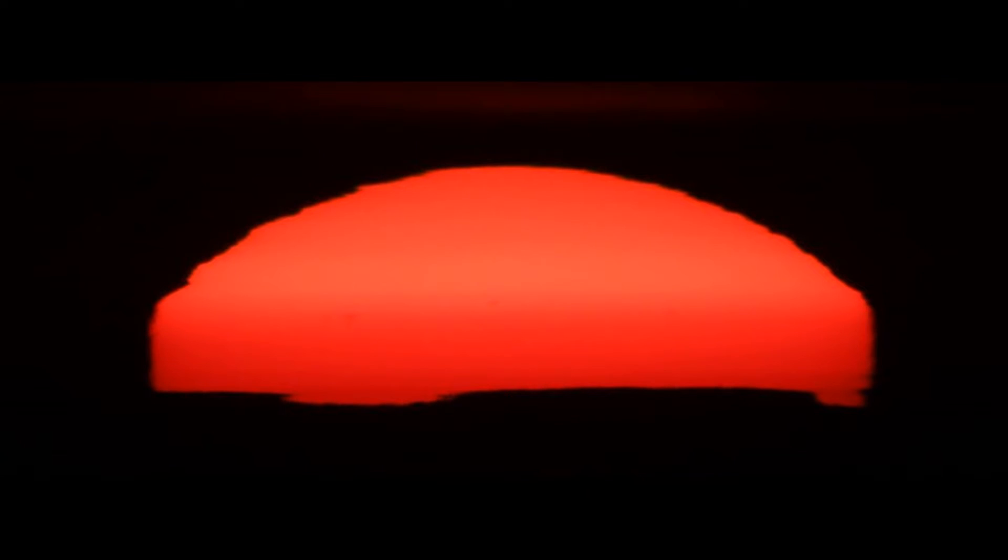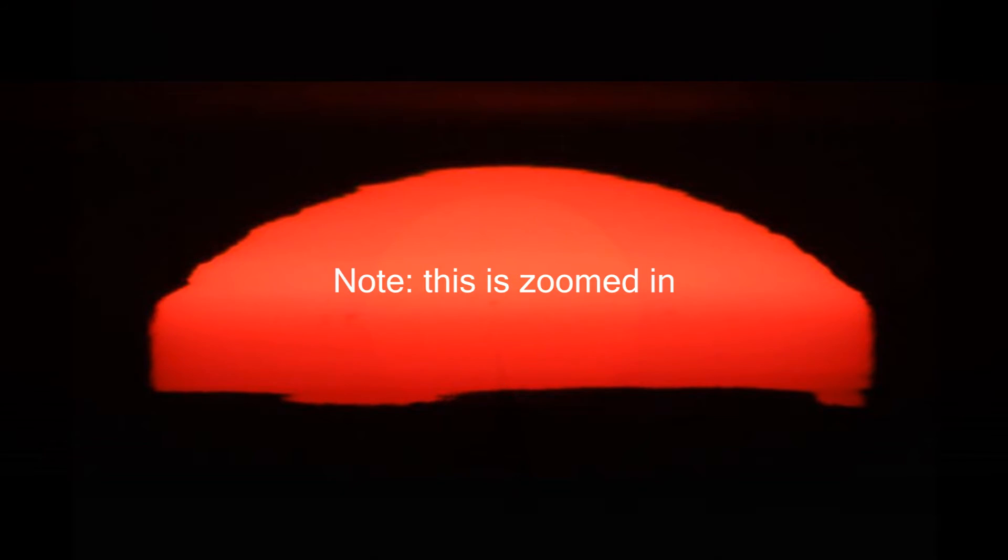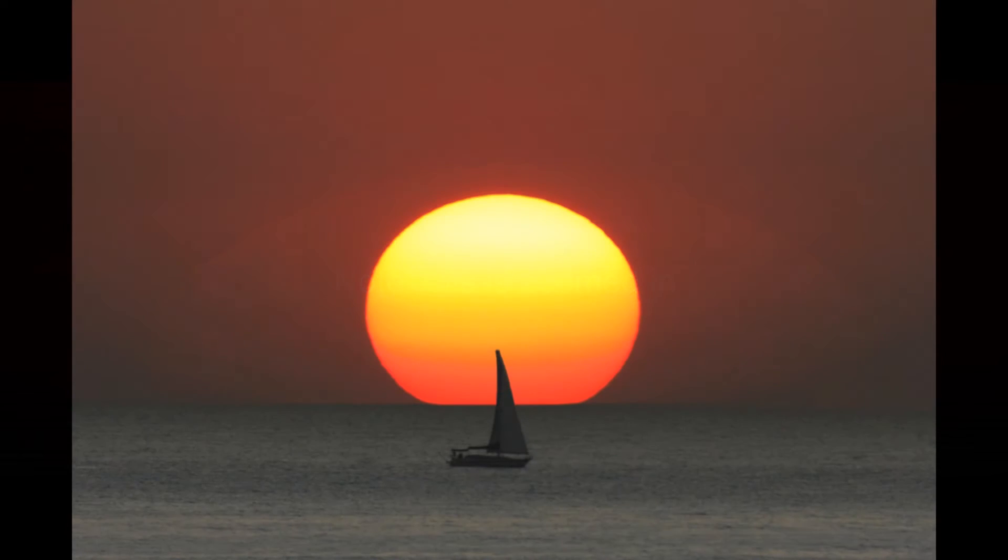Now people will argue that the flat earth theory must be wrong because if the sun were circling overhead, then it must get smaller and smaller until it ultimately disappears. This is essentially what happens though. But as the sun approaches this vanishing point, the light begins to distort and refract, making it appear to sink below the horizon.